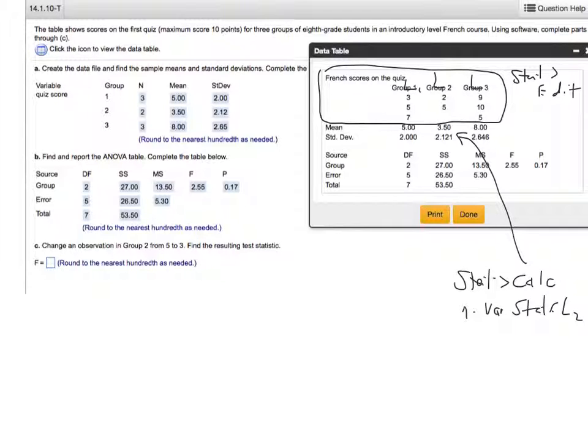The reason that's significant is because what we're about to do - obviously all this stuff for A and B is just copying these numbers over - but what it asks us to do in C is to change one of the observations. It's saying change this 5 to a 3. If you have this in your calculator already, go back into stat edit and change the 5 to a 3 and redo it.